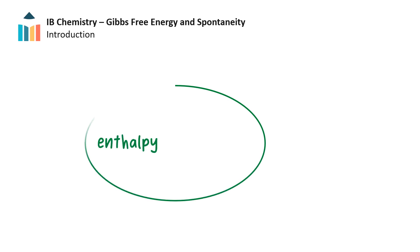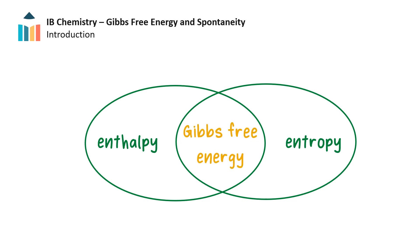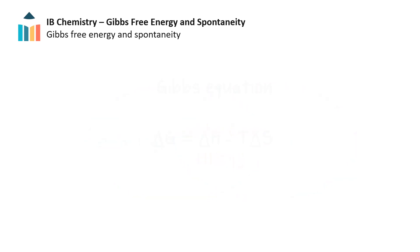Clearly, both enthalpy change and entropy change in a reaction play a role in determining the spontaneity or feasibility of the reaction and a product's stability. The two are related by Gibbs free energy. Enthalpy change and entropy change at constant pressure are related in the Gibbs equation.